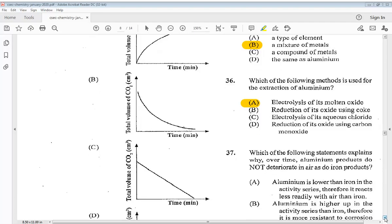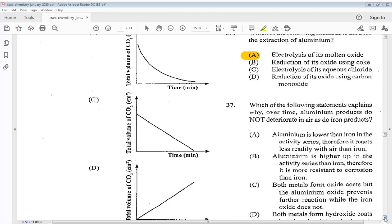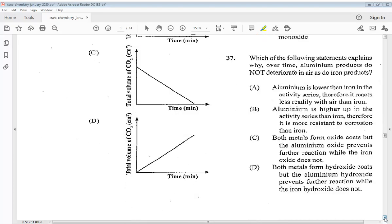Question 37. Which of the following statements explains why, over time, aluminum products do not deteriorate in air as do iron products. A aluminum is lower than iron in the activity series therefore it reacts less readily with air than iron. B aluminum is higher up in the activity series than iron therefore is more resistant to corrosion than iron. C both metals form oxide coats but the aluminum oxide prevents further reaction while the iron oxide does not.